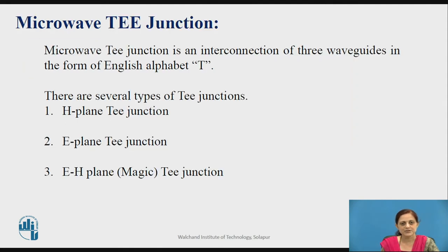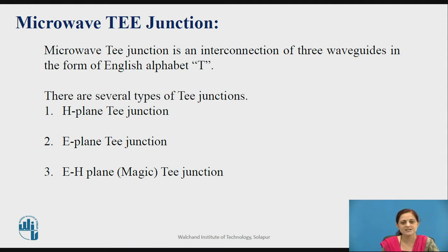What is microwave T junction? A microwave T junction is an interconnection of three waveguides in the form of the English alphabet T. There are several types of T junctions — microwave components: H-plane T junction, E-plane T junction, and the combination of E-plane T and H-plane T junction, which is also called as Magic T junction.